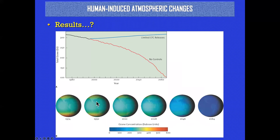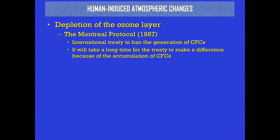If nothing had been done, by mid-century the ozone hole would have spread across the Earth. However, we have done something about it and the problem is starting to go away — a good result. They were banned in 1987 under what's called the Montreal Protocol.